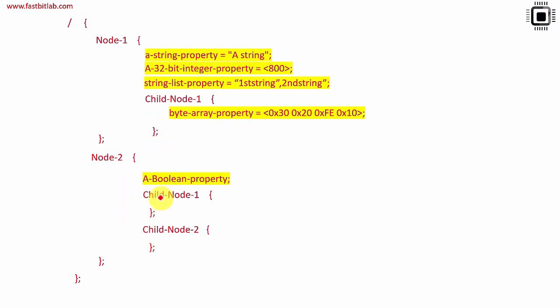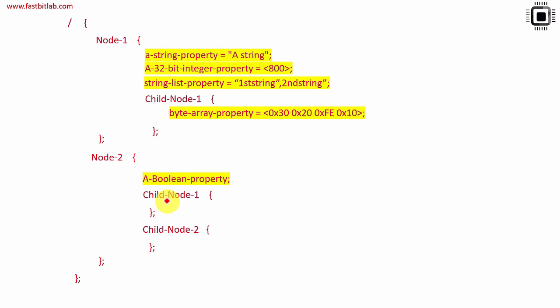These two nodes are children of node 2, and child 2 is a sibling of child 1. Linux also uses such terminologies like child, parent, and sibling. We'll understand more on this when we write some code. You can also explain a child node using different properties.